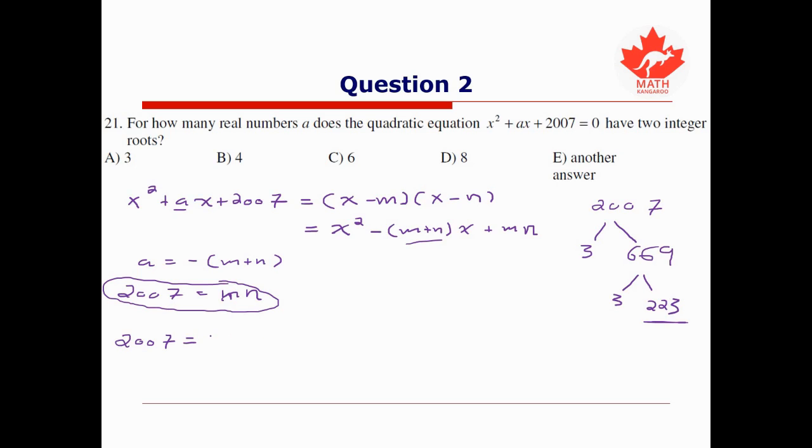So that means all the possible factorizations of 2007 are: we can write this as 1 × 2007, or 3 × 669 (that is 3 × 223), or we could multiply the two 3's together first for 9 × 223. And that's it. There's no other way to arrange 3, 3, and 223 into two distinct factors.